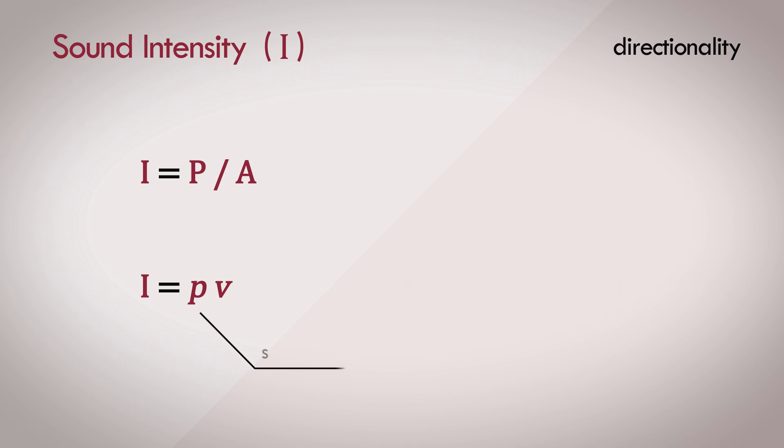Here, pressure is a scalar quantity, meaning that it just has some value associated with it, but velocity is a vector quantity. In mathematics and geometry, a vector is a quantity which has both magnitude and direction. Here, the velocity has some value which represents the speed of oscillations of the particles, and also a spatial direction which represents the tendency of oscillations in a particular direction, and intensity inherits this property of directionality.